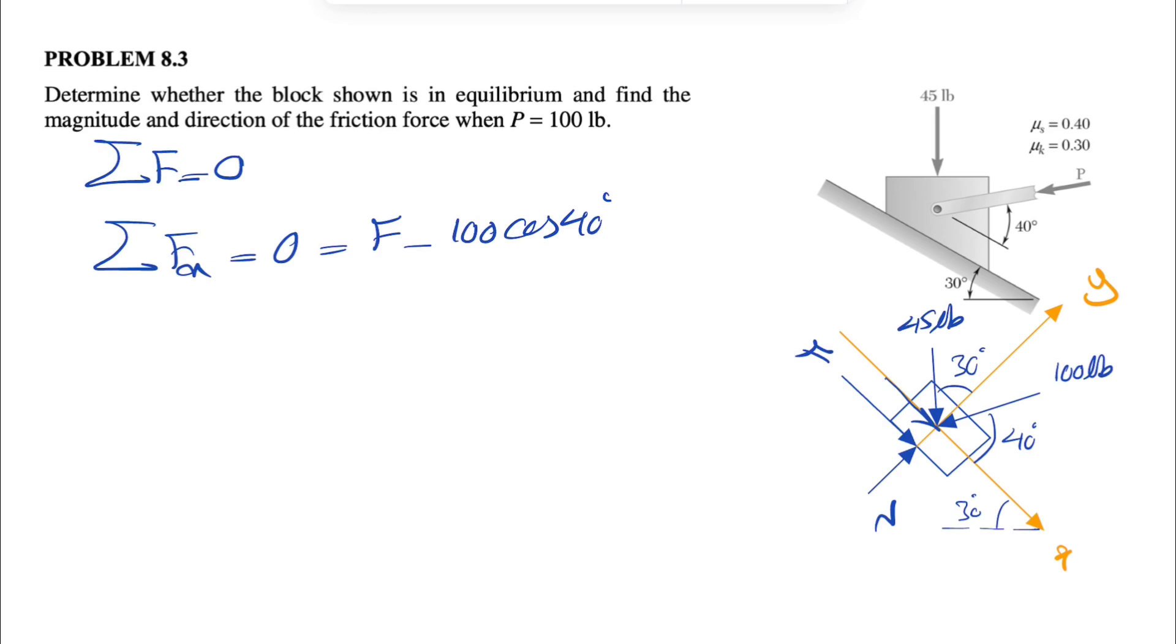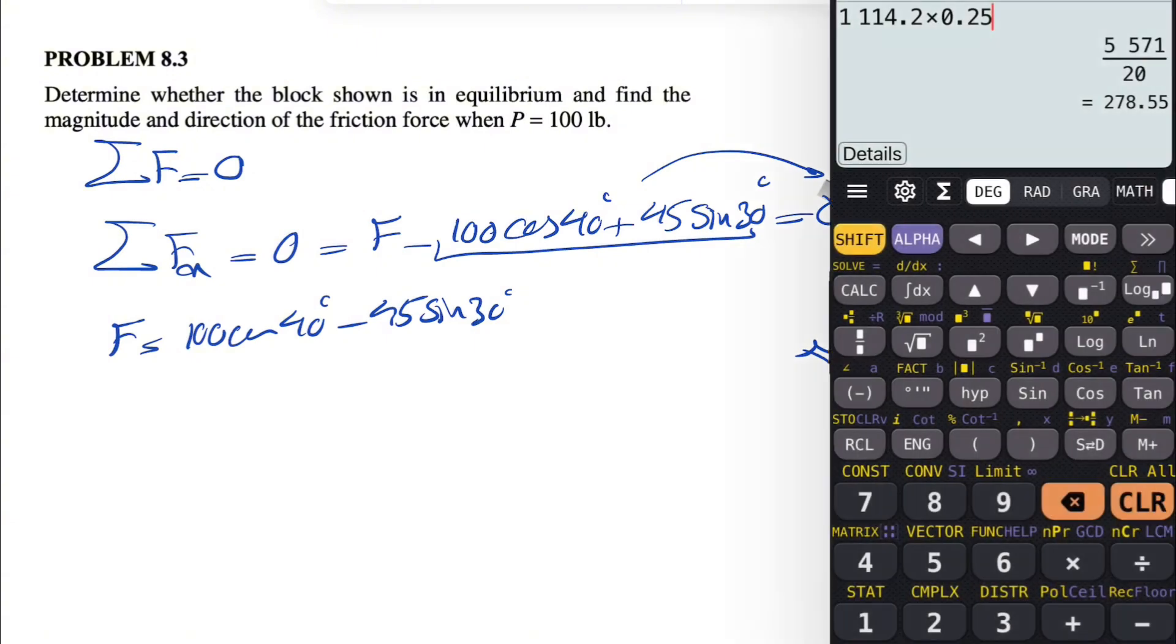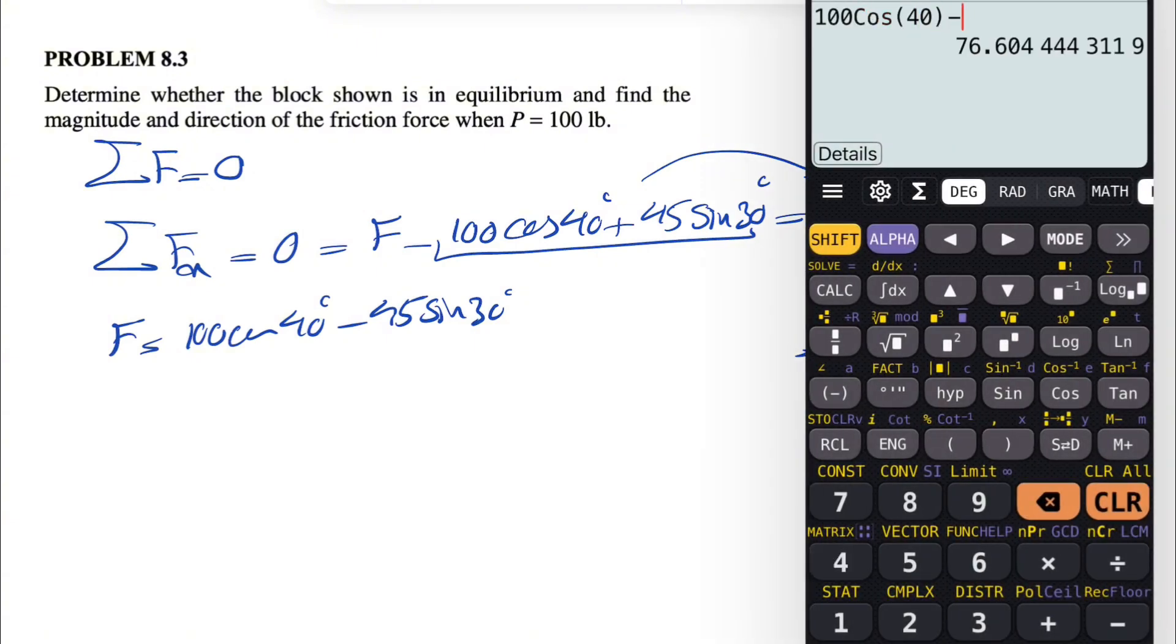So the X component of that one is the force that I showed in here is positive. So plus 45 sine of 30 degrees. And that's pretty much everything equals zero. And we can find F in here, which will be 100 cosine of 40 degrees minus 45 sine of 30 degrees. So basically I bring these two on the other side. Let's see what we get. So 100 cosine of 40 minus 45 sine of 30. This is going to be 54.1 pounds.